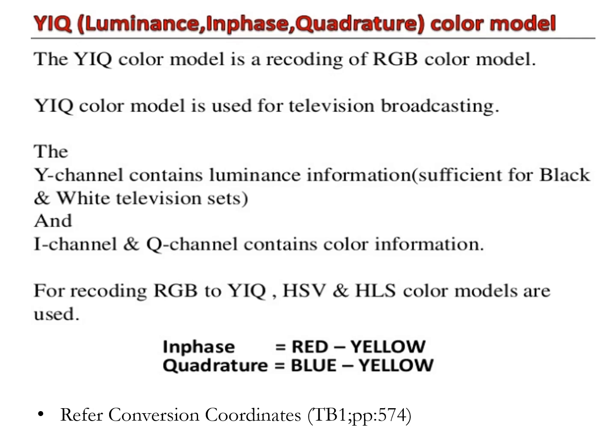YIQ was formerly used in North America, Japan, and elsewhere for television broadcasts. This system stores a luminance value with two chrominance values corresponding approximately to the amounts of blue and red. It corresponds closely to the YUV scheme used in Australia and Europe, except that the YIQ color space is rotated 33 degrees with respect to the YUV color space.